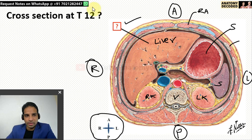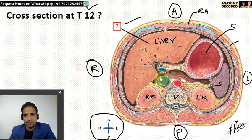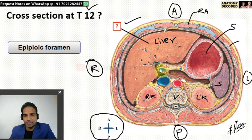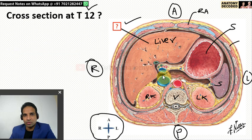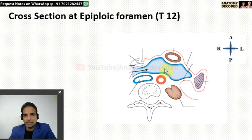For the abdominal aorta, T12 is a very important landmark, because it is at this level that the descending thoracic aorta continues as the abdominal aorta. One more very important topic with respect to this section is the epiploic foramen, which is just behind this right free margin. We will learn a little more detail about the epiploic foramen. Here we can see a schematic diagram to show the various relations of the epiploic foramen at that level.